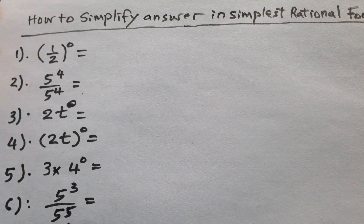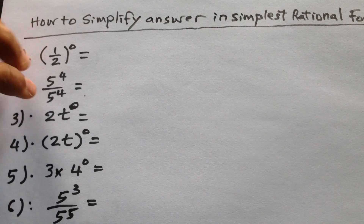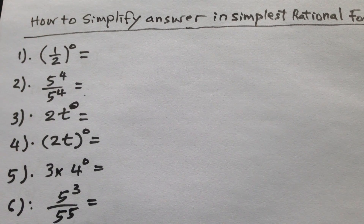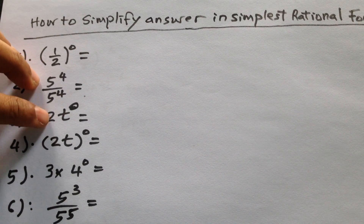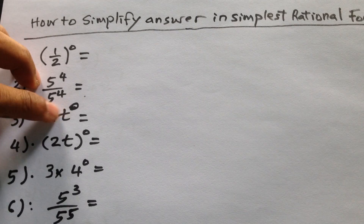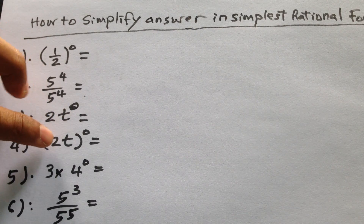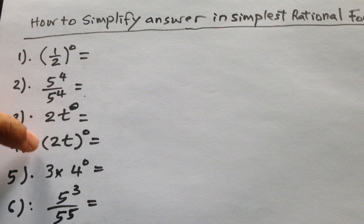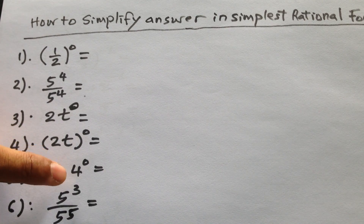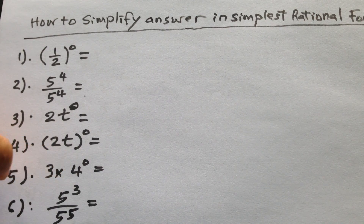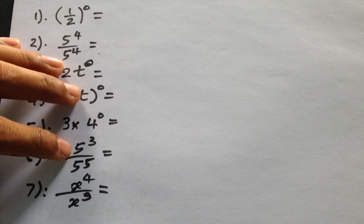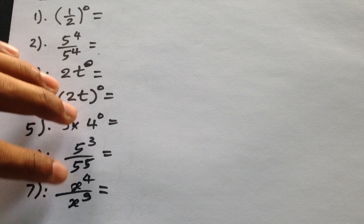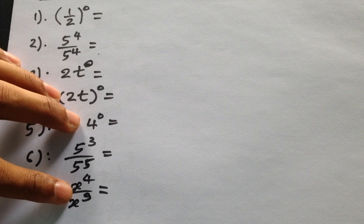Now, the problems are: 5 times 2 to the power 0, 2 times 2 to the power 0, 3 times 4 to the power 0, 5 times 2 to the power 3 divided by 5 to the power 5, and 8 to the power 4 divided by 8 to the power 9.